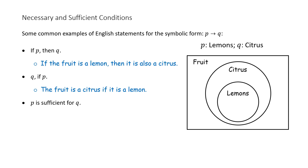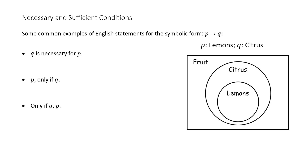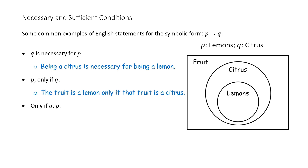'P is sufficient for Q': being a lemon is sufficient for being a citrus — if the fruit is a lemon, it is going to be a citrus. 'Q is necessary for P': being a citrus is necessary for being a lemon — being a citrus does not necessarily make the fruit a lemon, but it is a necessary condition. 'P only if Q': the fruit is a lemon only if that fruit is a citrus. 'Only if Q, P': only if the fruit is citrus is that fruit a lemon.